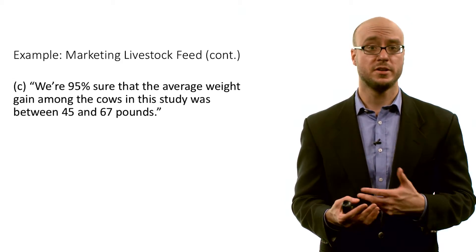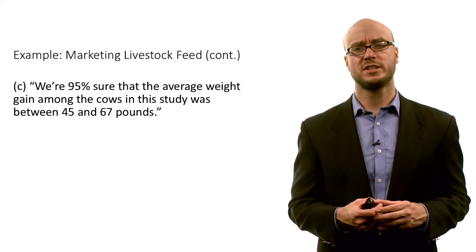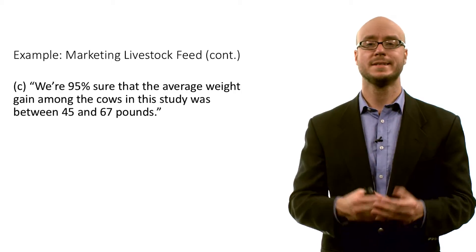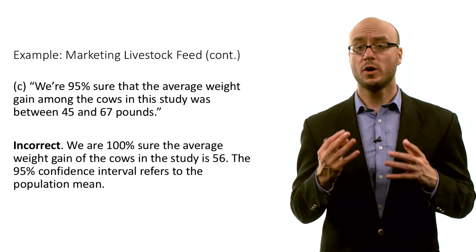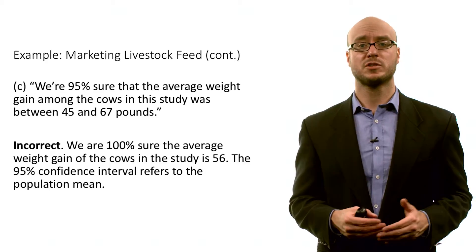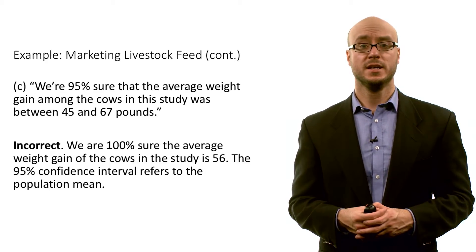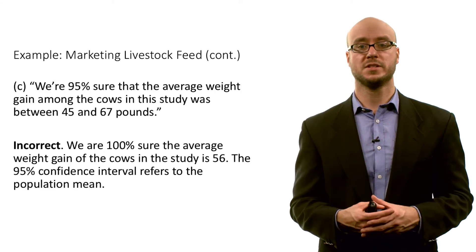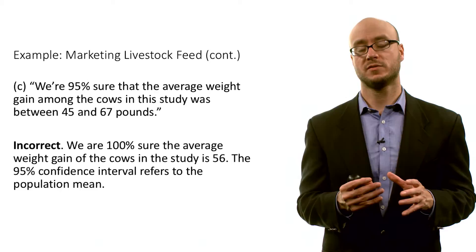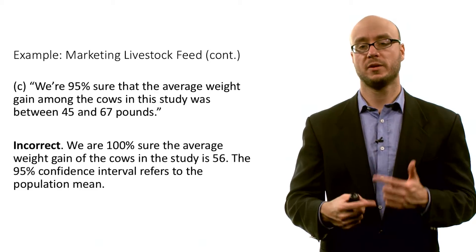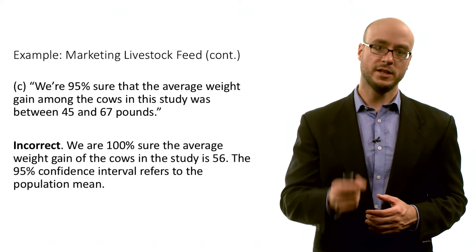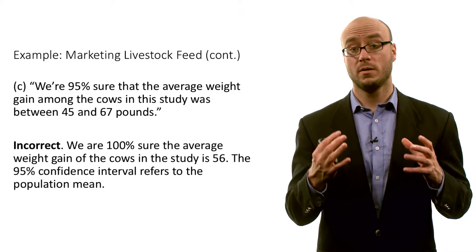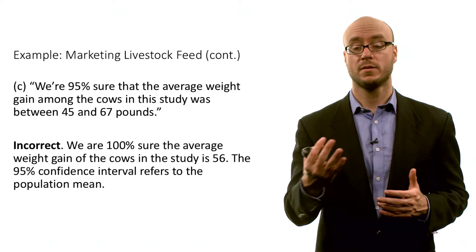Let's see another interpretation. Another marketer says: we're 95 percent sure that the average weight gain among the cows in this study was between 45 and 67 pounds. Again, this is incorrect — we're 100 percent sure that the average weight gain of the cows in this study is 56 pounds. Just look at the sample mean. We know the properties of the sample. The 95 percent confidence interval refers to the population mean — it refers to this process of repeatedly randomly taking samples of the same size from the population and putting bounds on these different point estimates.